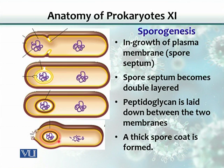When this thick spore coat is formed, the bacterium disintegrates. The DNA — a copy of this DNA as well — is degraded, and the rest of the spore is also disintegrated, releasing the spore into the environment.